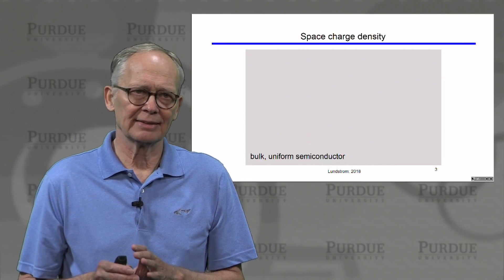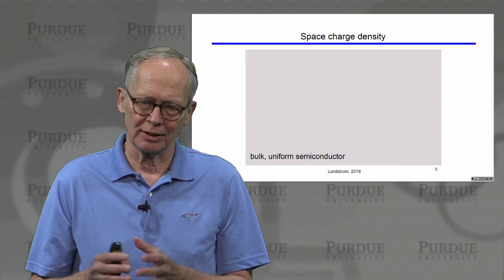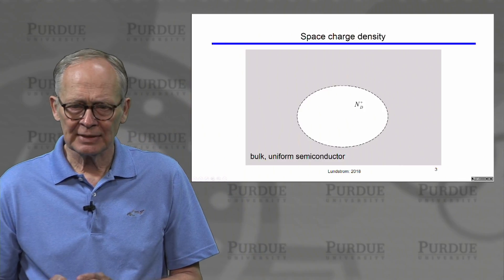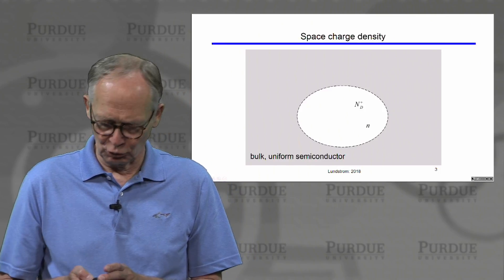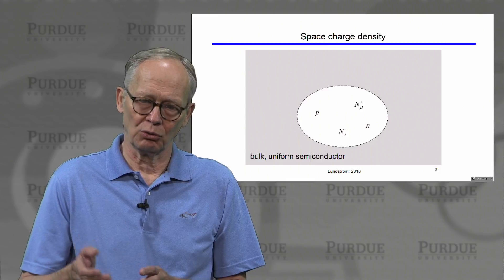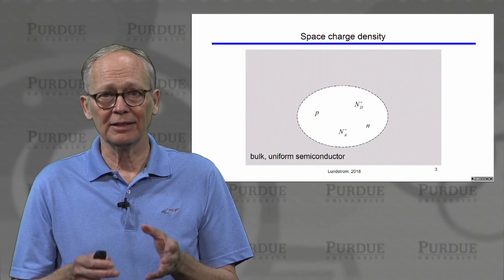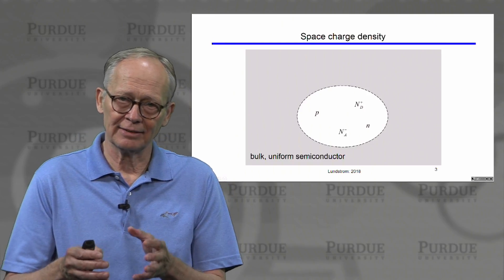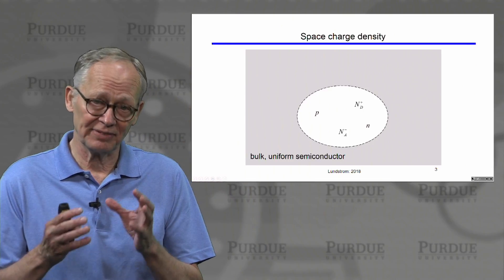To solve this problem, I want to begin with a concept called space charge neutrality. Think about a bulk, uniformly doped semiconductor where everything is spatially uniform. In a region of this semiconductor, there are some ionized dopants with positive charge, some mobile electrons that came from those ionized dopants, some ionized acceptors with negative charge, and some positively charged holes that came from those acceptors. The electrons and holes — N and P — are mobile and free to move around. The dopants, N_D and N_A, the N-type and P-type dopants, are fixed in the lattice and cannot move unless we heat the lattice to very high temperatures.